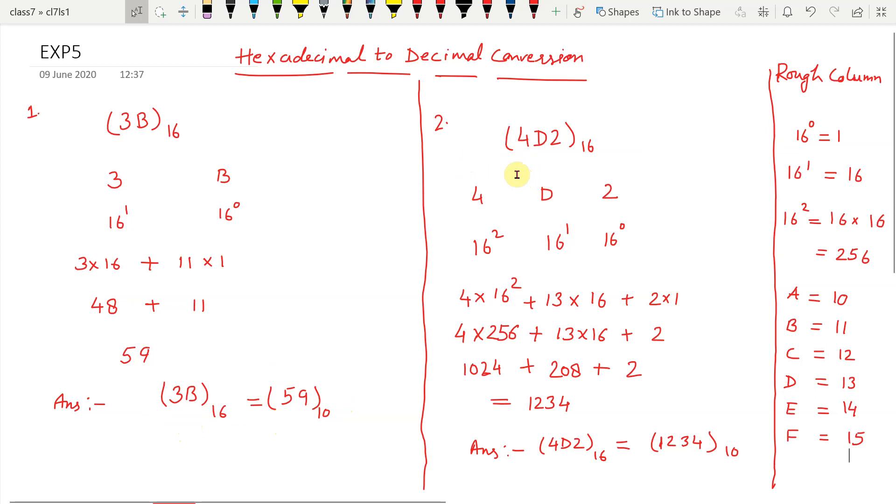In the second example, hexadecimal number is 4D2. Write the given number in this way.